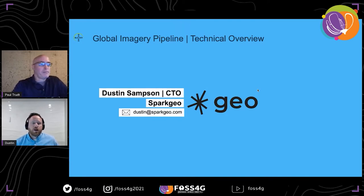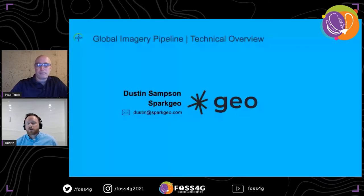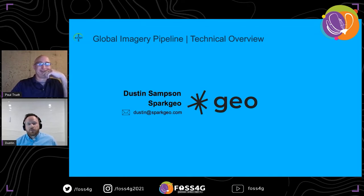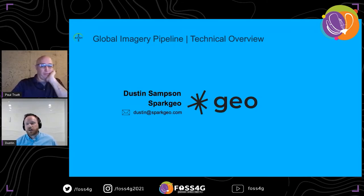Thanks, Paul. I just want to do a quick introduction. My name is Dustin Sampson and I work for Spark Geo. If you're interested to find out more about Spark Geo, please visit sparkgeo.com. And if you're looking for a change, Spark Geo is a great place to work, as is Bayer — please check out our job website if you're interested.